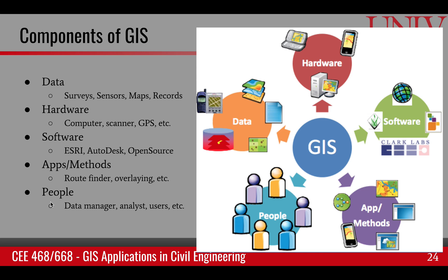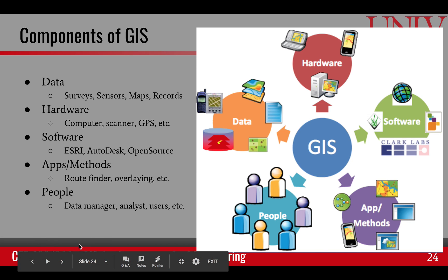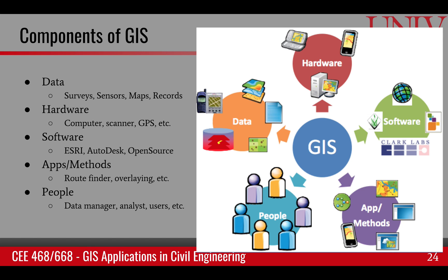The last but not least component of GIS is people, and that is an important concept. The word information itself should emphasize why humans are important — GIS plays an important role in converting data into information for human consumption. This includes data managers responsible for taking care of the data, analysts who process the data and ask questions from the data, and users who take those answers and make decisions and take actions.